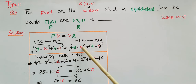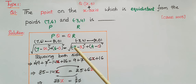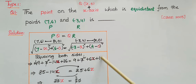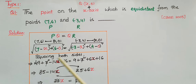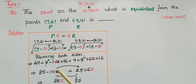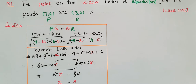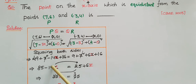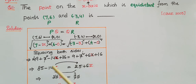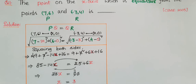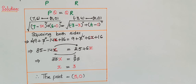The right side: (-3 minus x) whole square — taking out the minus, it becomes (3 plus x) whole square, giving 9 plus x squared plus 6x, plus 4 squared which is 16. Cancel x squared from both sides. Then 49 plus 36 is 85 minus 14x equals 9 plus 16 is 25 plus 6x. So 85 minus 25 equals 14x plus 6x, giving 60 equals 20x, therefore x equals 3. The point is (3, 0).